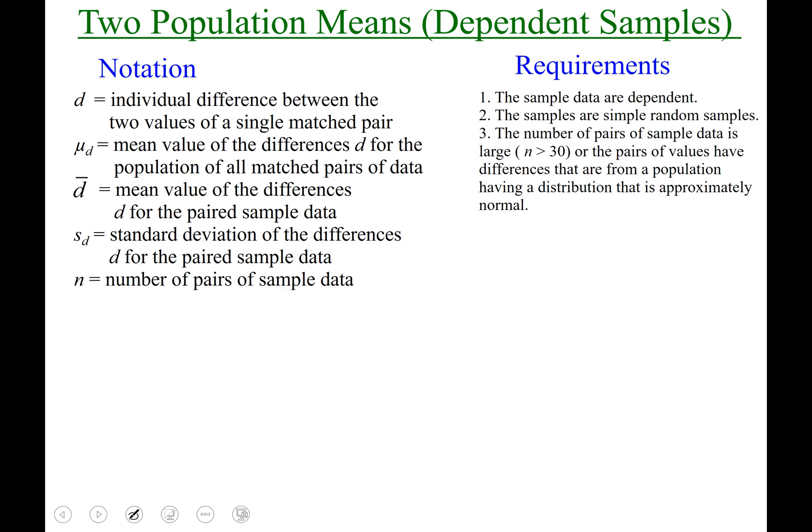Let's get our notation down first. Two population means is what we're addressing, dependent samples this time, contrary to our last section 9.2, which was two population means independent samples.